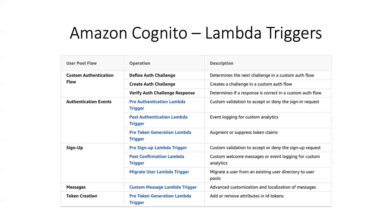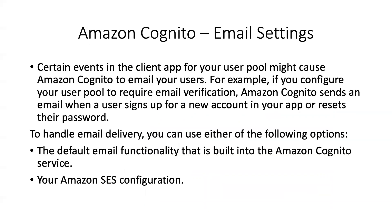Cognito integrates with Simple Email Service to send out emails whenever a person signs up. For example, if you configure a user pool to require email verification, Cognito sends an email whenever a user signs up with a link to verify. Most of us have seen this in real-time use cases — when you sign up to any SaaS product, it sends a verification email. Cognito has its own email functionality built in, but you can also provide your own Amazon SES configuration.